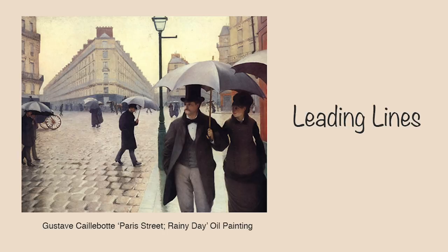Next we have leading lines. It's always good to have some type of perspective lines within your piece. This work by Gustave Caillebotte is one of my favourite pieces by him and I love the perspective he creates, leading the viewer down those streets in the distance and also making you wonder what that couple in the foreground are looking at. I really love his use of perspective lines just leading your eye off into the distance.